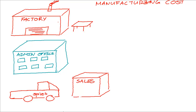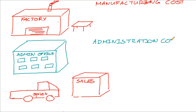All the costs related to the admin office will be known as administration costs. Then lastly, the costs related to the sales and distribution department will be known as selling and distribution costs.